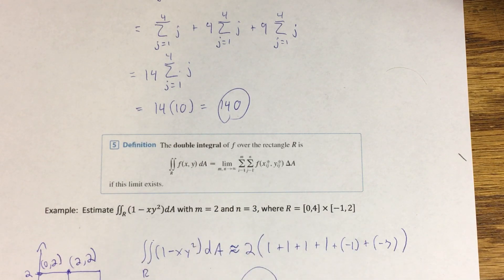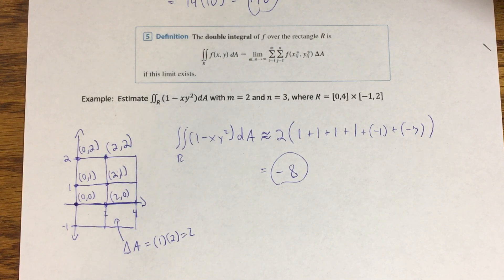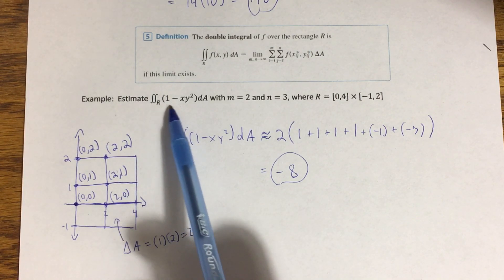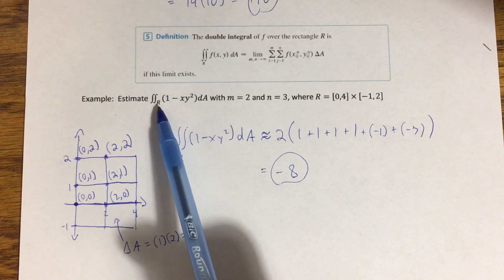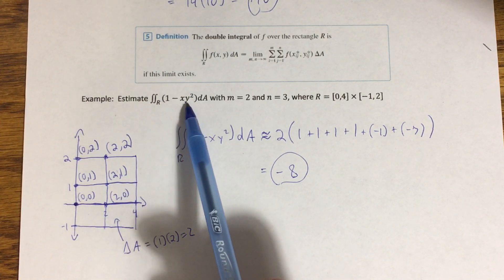So applying this limit gives us a perfect or an accurate volume under the surface. So now that we've come up with this definition, fortunately we're not going to have to use it directly very much. But let's try an example where we're not looking for the exact volume quite yet. We're going to start by looking for an estimation.